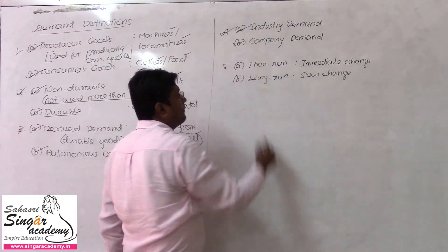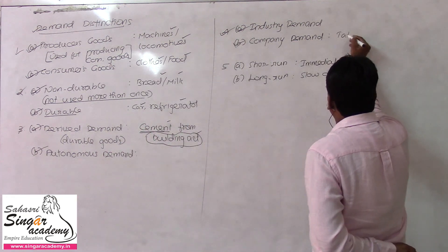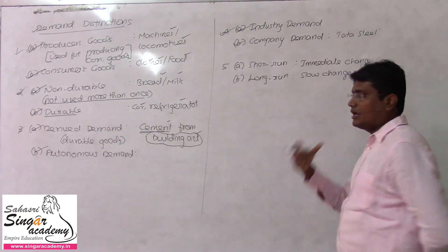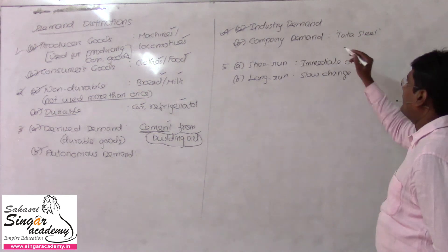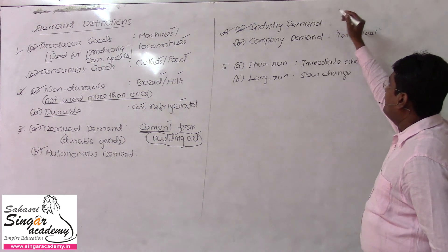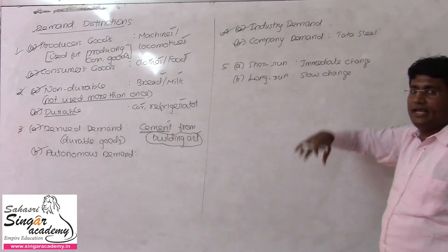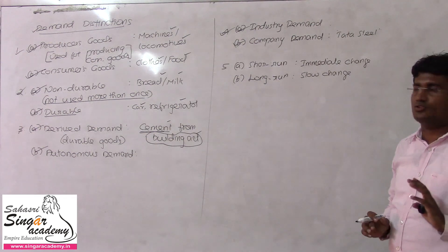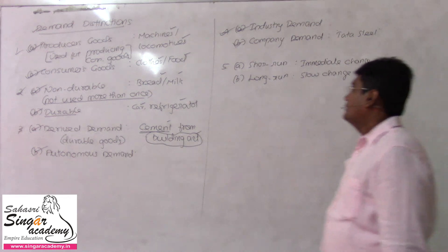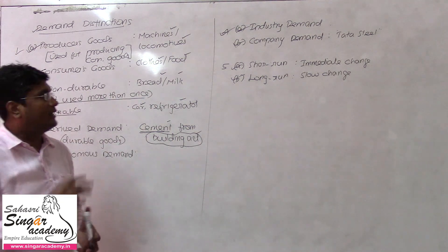Fourth block: Company Demand versus Industry Demand. For example, Tata Steel is one company, and its demand is Company Demand. But all steel companies together — Tata Steel, JSW, and others — that combined demand is called Industry Demand.